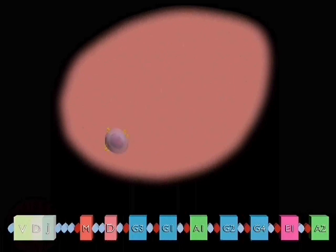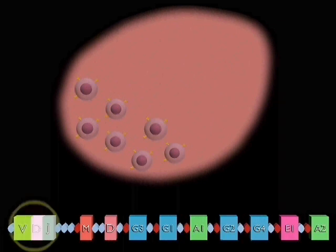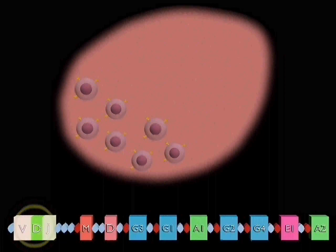A primed B cell enters a germinal center and undergoes rapid division. At the same time, a mechanism is activated which introduces mutations into the DNA around the recombined VDJ gene, so each B cell has a slightly different antibody. Occasionally, a mutation will generate antibody with a higher affinity for its antigen.